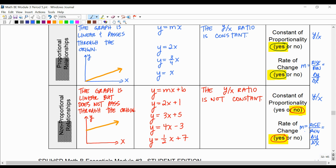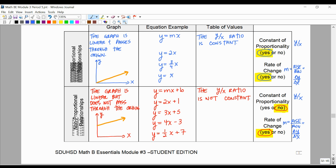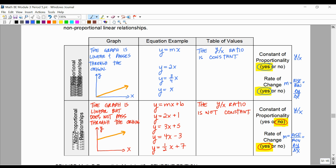So all lines have an m, a rise over run, or change in y over change in x. But not all lines have a y over x that stays the same. So that's our summary table for the two types of lines that we're going to be studying, and the two types of lines that we've actually seen, which is proportional and non-proportional.